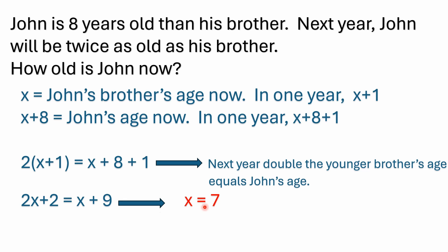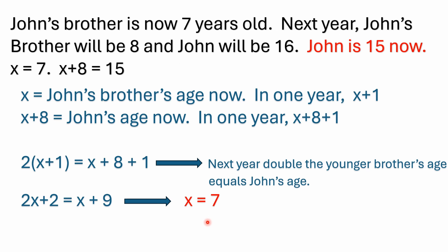So x equals seven. That's telling us that John's brother's age — the younger brother — would be seven years old today. That means John's brother is now seven years old.